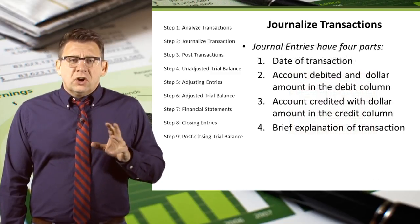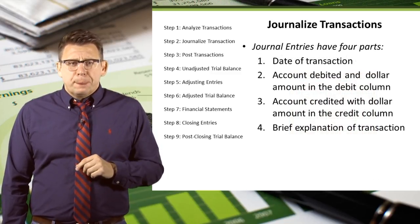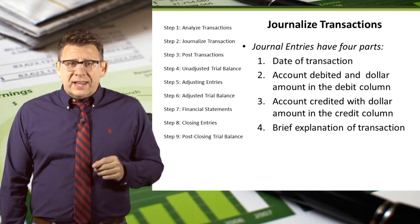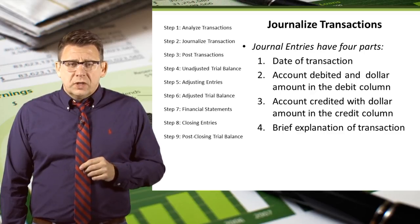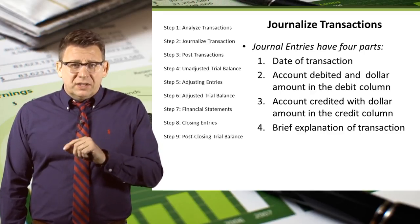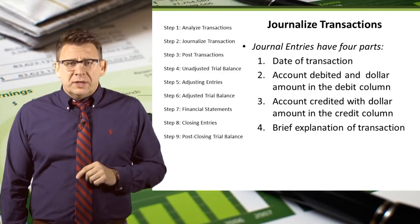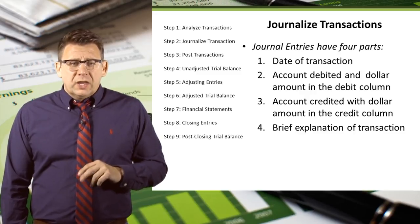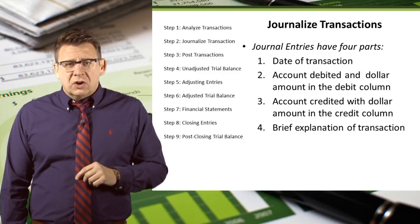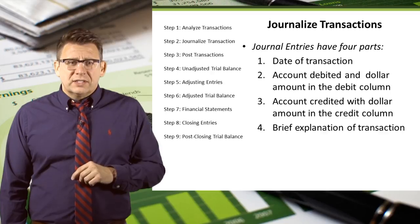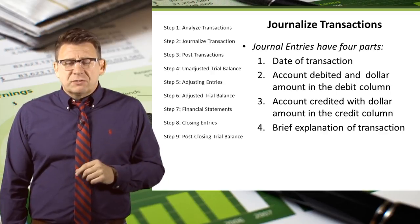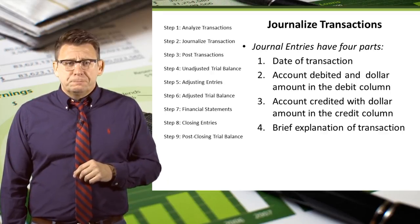Journal entries have four parts: a date of the transaction, the account debited and the dollar amount debited, the account credited and the dollar amount of the credit, and finally a brief explanation of the transaction.